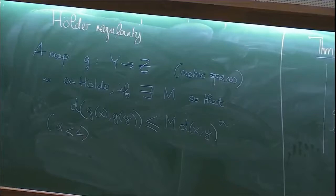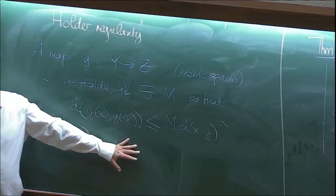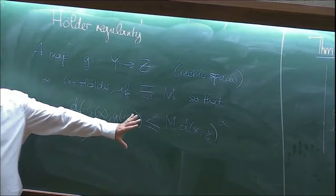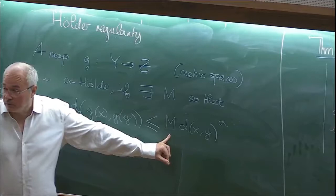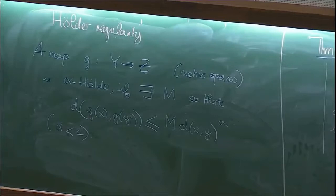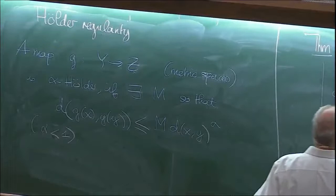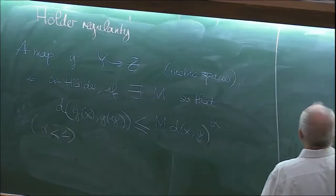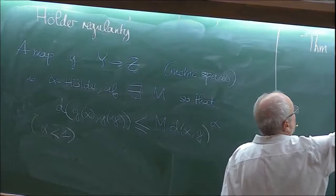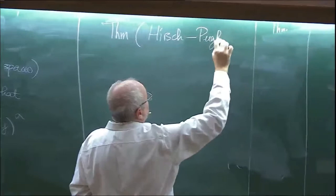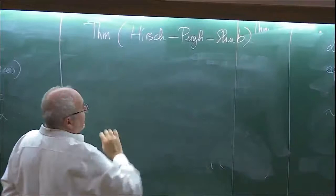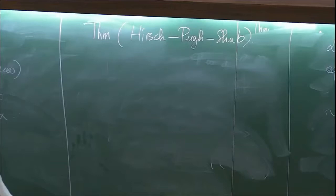Hölder maps are pretty good — almost as good as Lipschitz maps in the sense that you have a modulus of continuity. If you have a family of Hölder maps for the same constant M, then they are equicontinuous. So what is the theorem? I learned it in the famous book by Hirsch, Pugh, and Shub. I'm not sure of the attribution — I think Anosov may have known it.